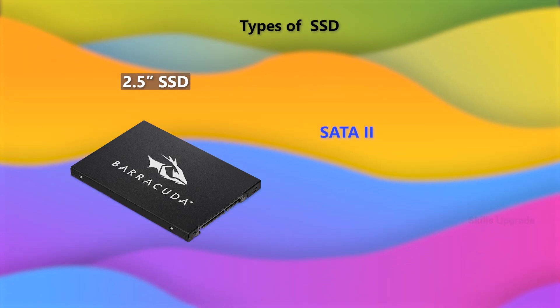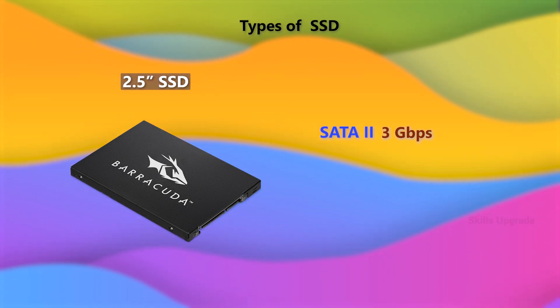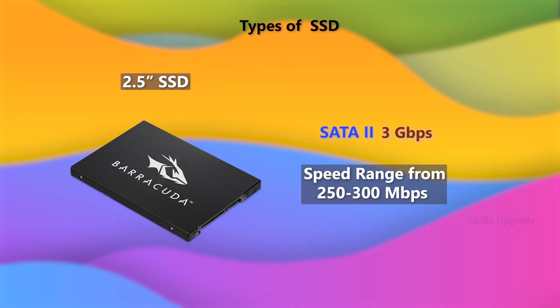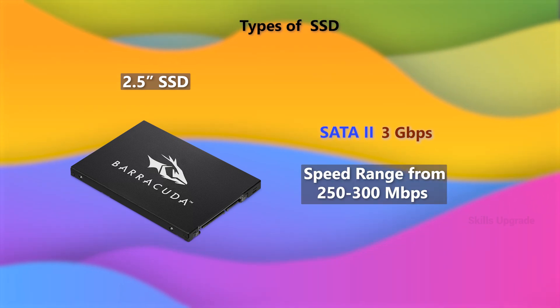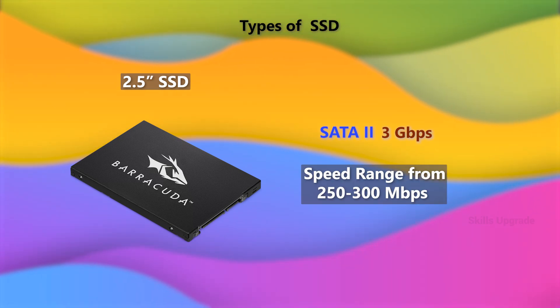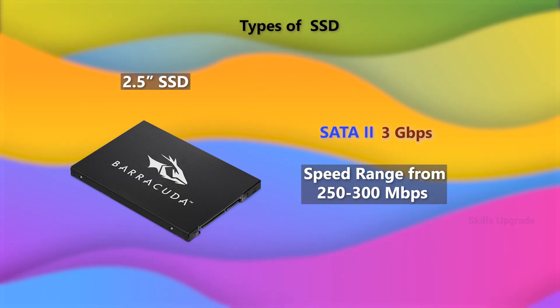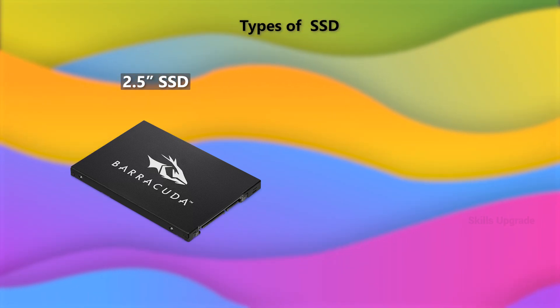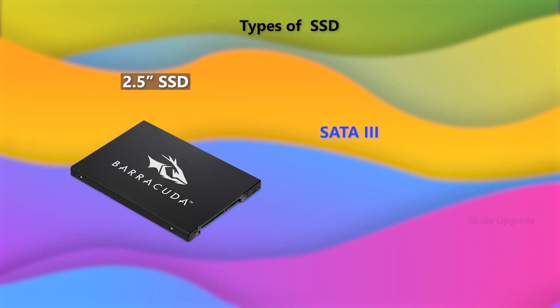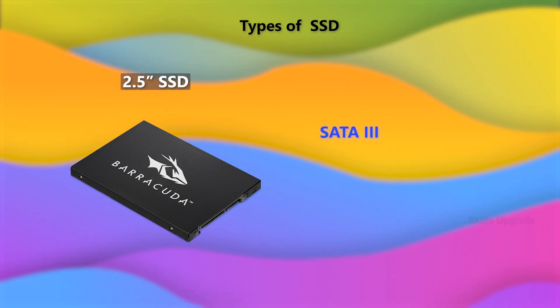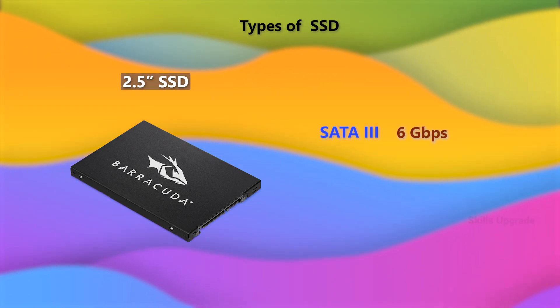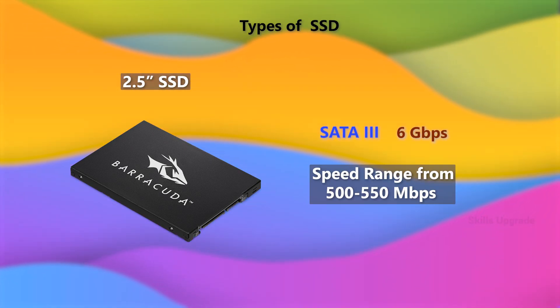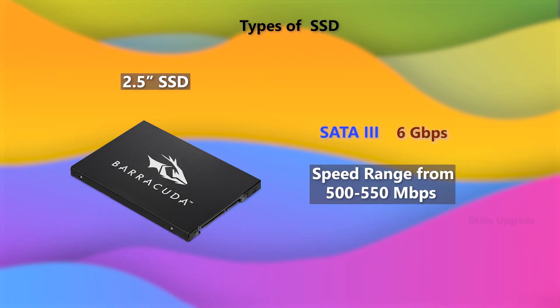SATA 2 version is 3 Gbps and you can get 250-300 Mbps. SATA 3 version is transferred to a max of 550 Mbps.